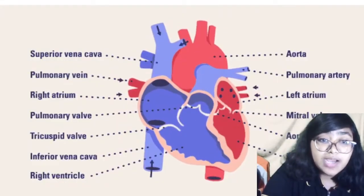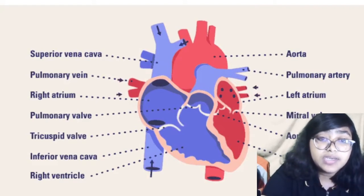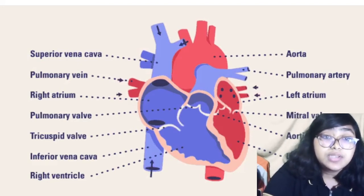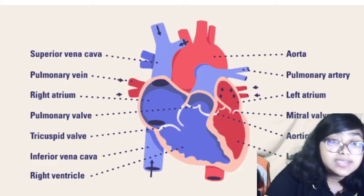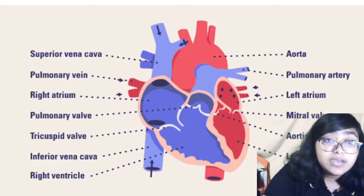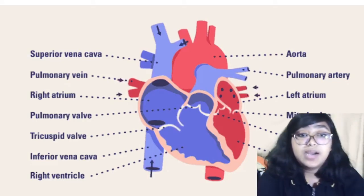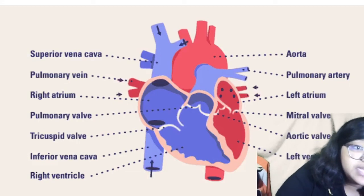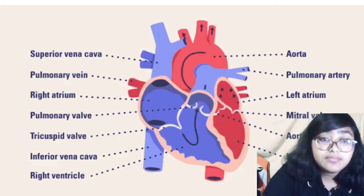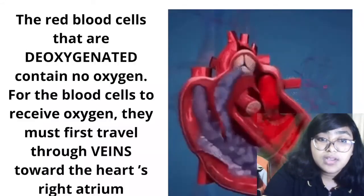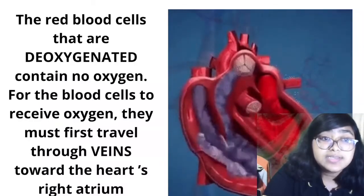Now we will see exactly how the heart works. The heart is a muscular organ that beats approximately 72 times per minute. As you can see, the heart is labeled with parts including the aorta, pulmonary artery, left atrium, mitral wall, aortic wall, superior vena cava, and right atrium. We will go through the function of each one by one.